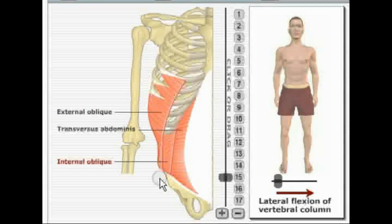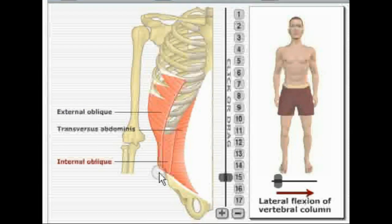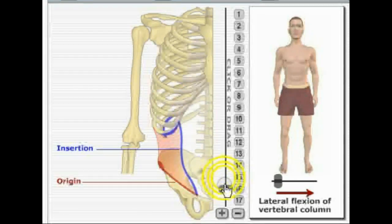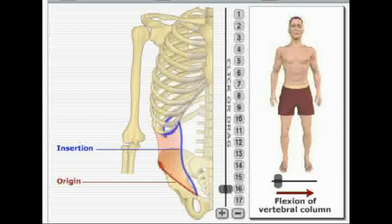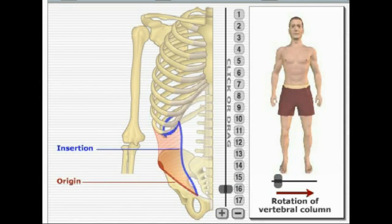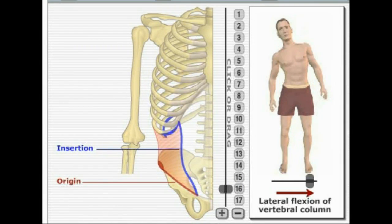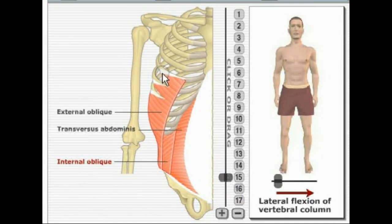The internal oblique muscle originates on the iliac crest of the ilium, the inguinal ligament, and the thoracolumbar fascia. Its actions include flexion of the vertebral column, rotation of the vertebral column, and lateral flexion of the vertebral column — just like the external obliques.